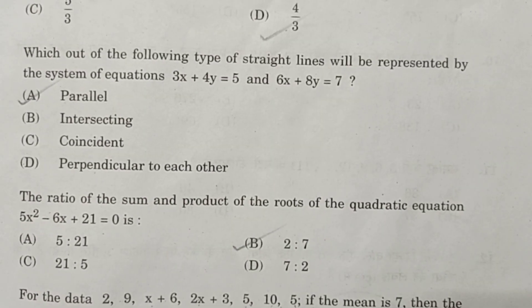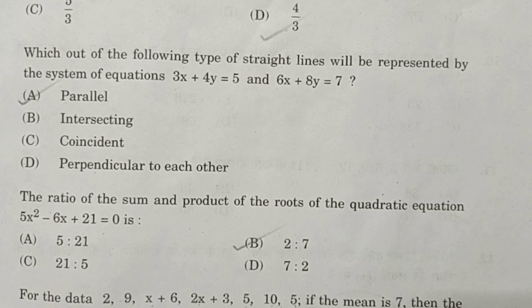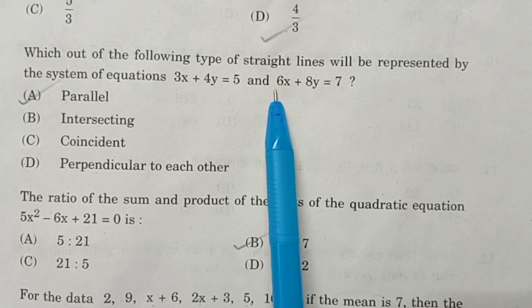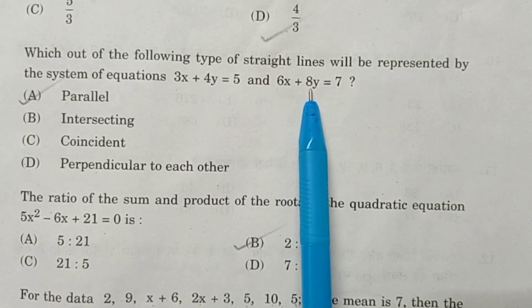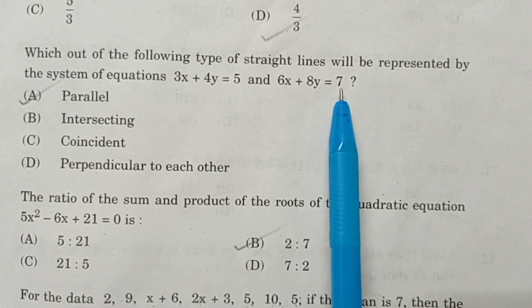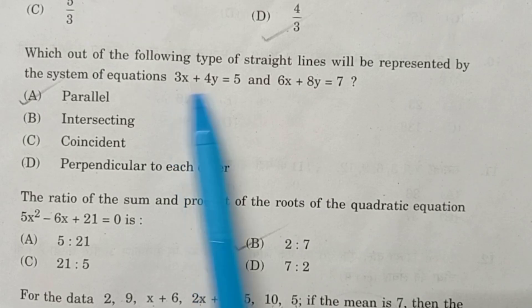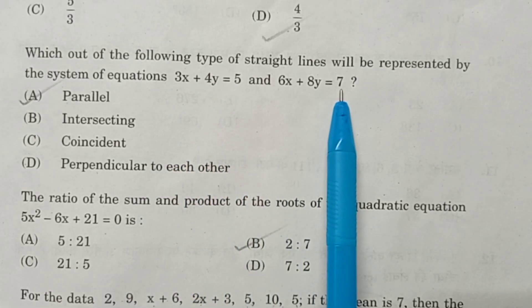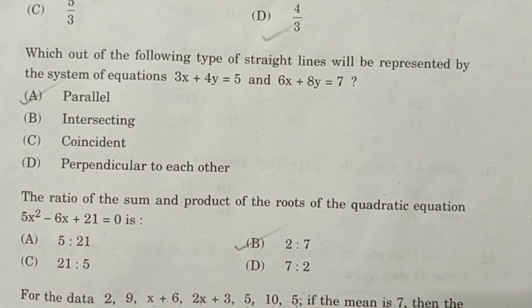Question number 4. Which out of the following type of straight lines will be represented by the system of equations 3X plus 4Y equals 5 and 6X plus 8Y equals 7? A1 by A2 is equal to 3 by 6, that is 1 by 2. B1 by B2 is 4 by 8 equals 1 by 2, and C1 by C2 is equal to 5 by 7. A1 by A2 equals B1 by B2, but not equal to C1 by C2, therefore the correct answer is parallel.